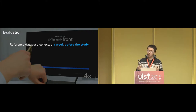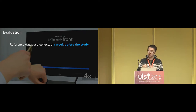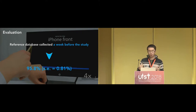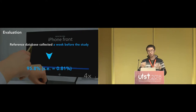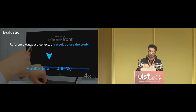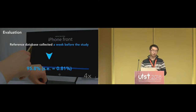The volunteer was not recruited again in the study. It turns out our system can achieve an overall accuracy of 95.8%, which is very promising considering there was no per-user calibration, no user training, and a considerable time separation between the experiment and when the reference data was collected.